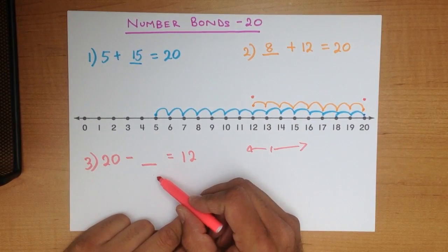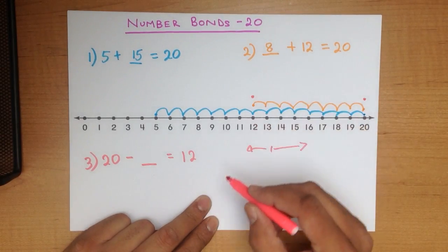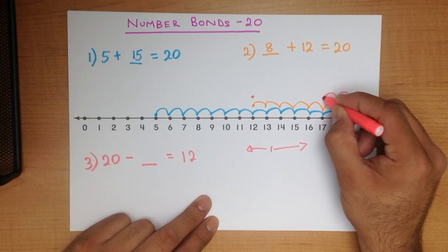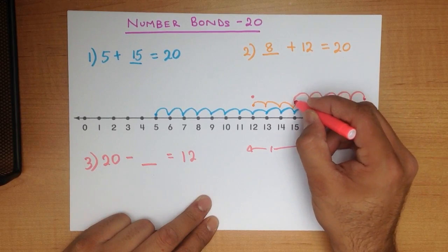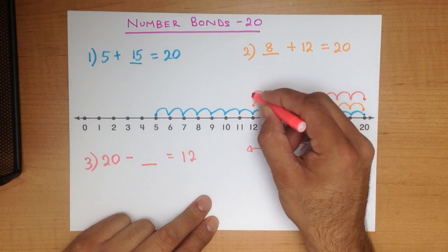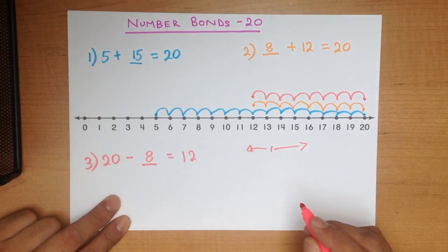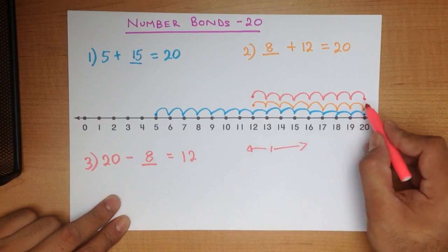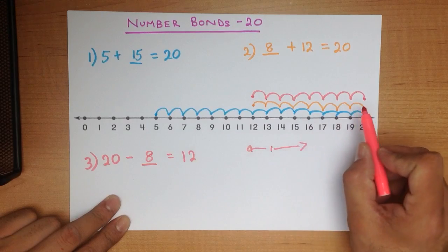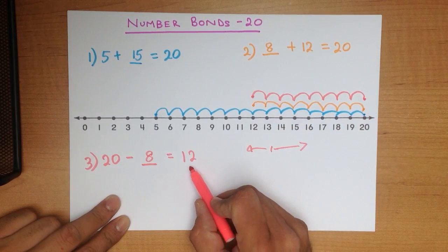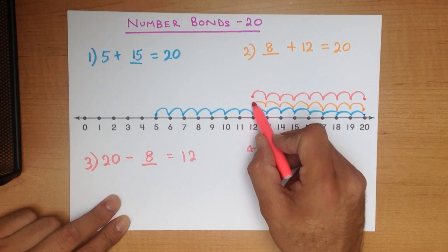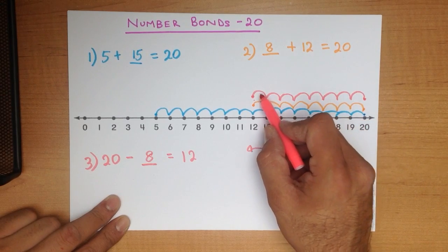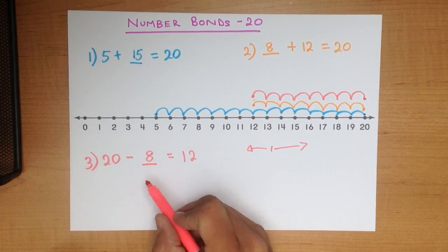So how many jumps do we have to make from 20 to get to 12? Let's go through this: 1, 2, 3, 4, 5, 6, 7, 8. That is our answer. 20 minus 8 equals 12. We started at 20, it's a minus question so we went backwards, and we had to finish at 12. How many jumps did we make? 8. 20 minus 8 equals 12.